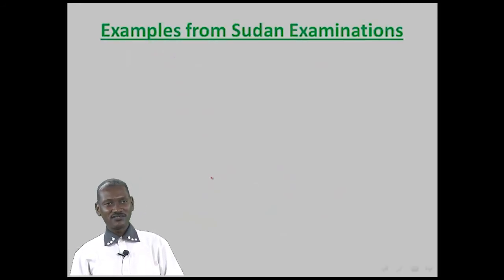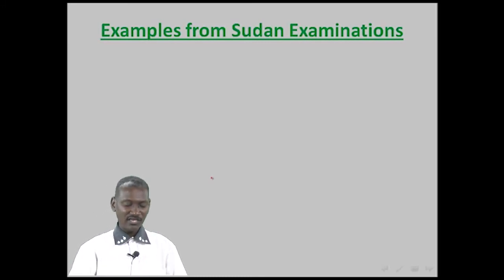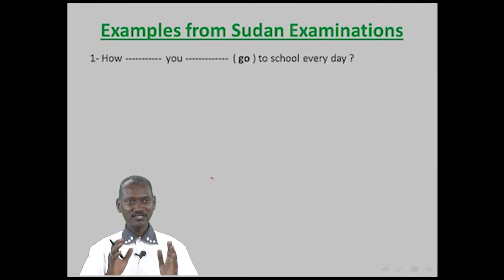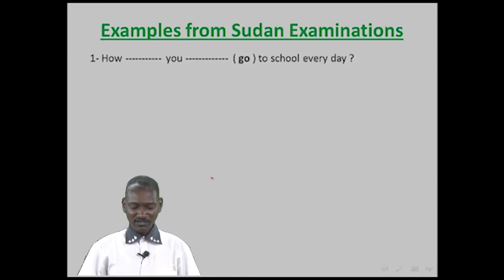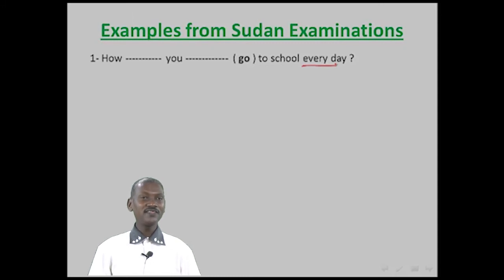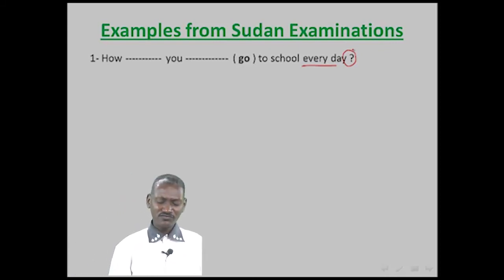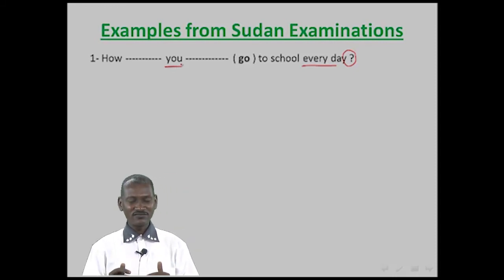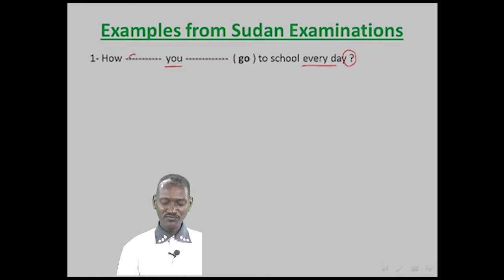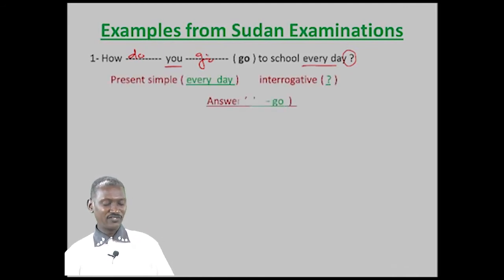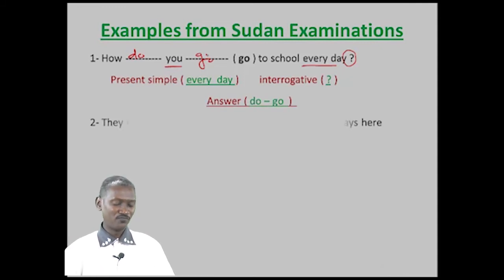Now, examples from Sudan examinations. Example one: 'How you go to school every day?' It is Present Simple because of 'every day', and interrogative because of the question mark. The subject is 'you', so we put 'do' before the subject. Answer: 'How do you go to school every day?'